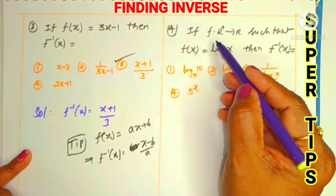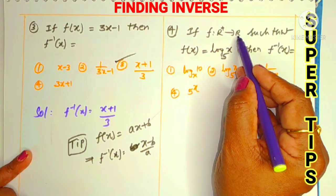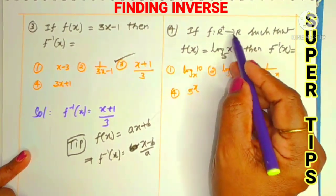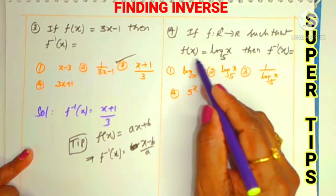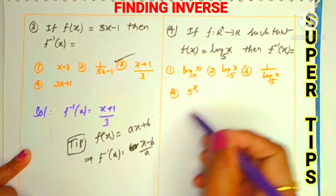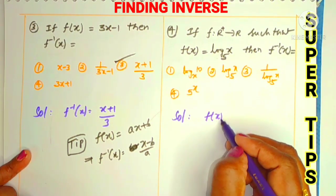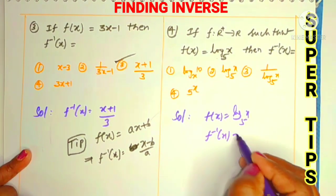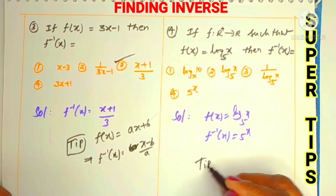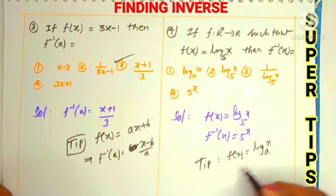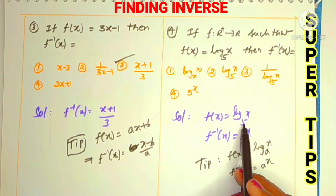Question 4: f from ℝ⁺ to ℝ is defined such that f(x) = log x to the base φ. Find f⁻¹(x). This is the same model as Question 1. The tip: if f(x) = log x to the base a, then f⁻¹(x) = a^x. So in place of a there is φ, therefore f⁻¹(x) = φ^x — clearly the fourth option.